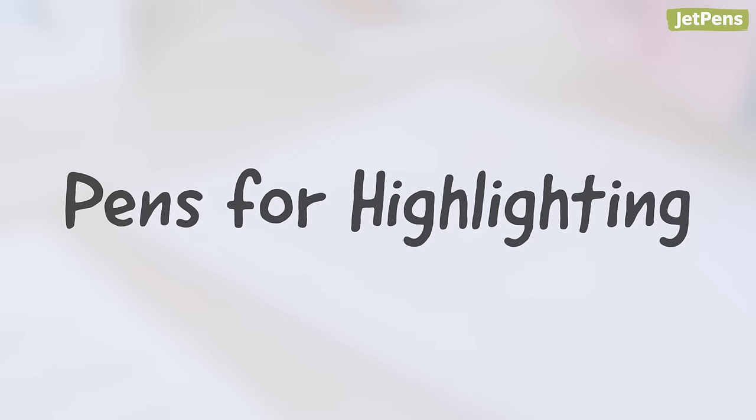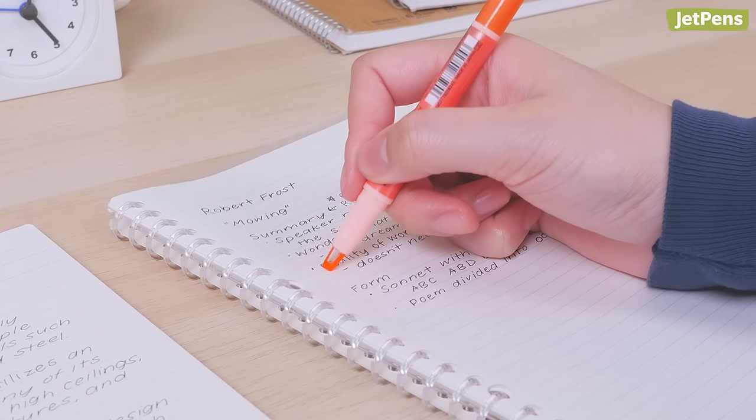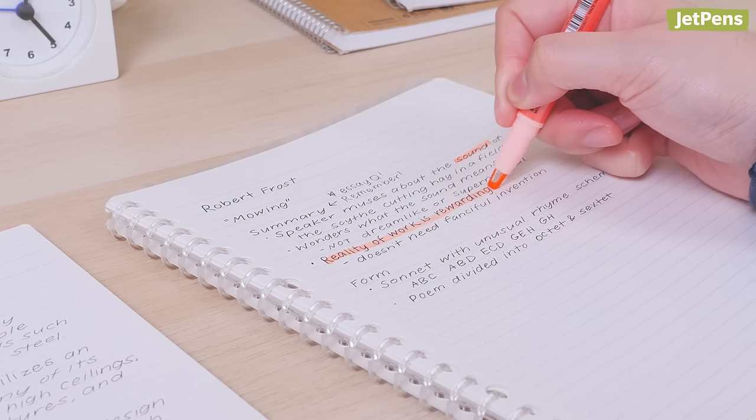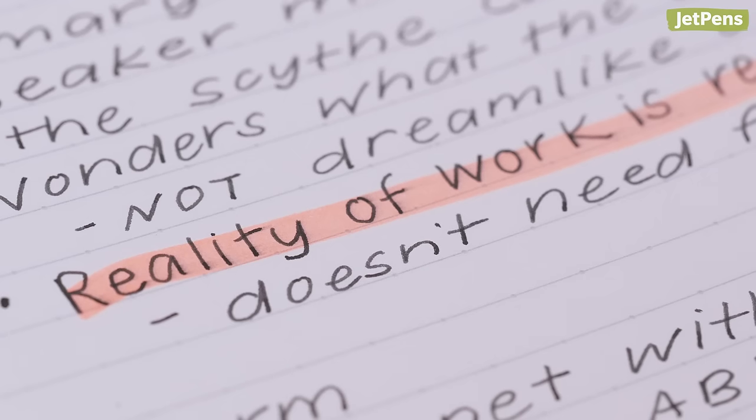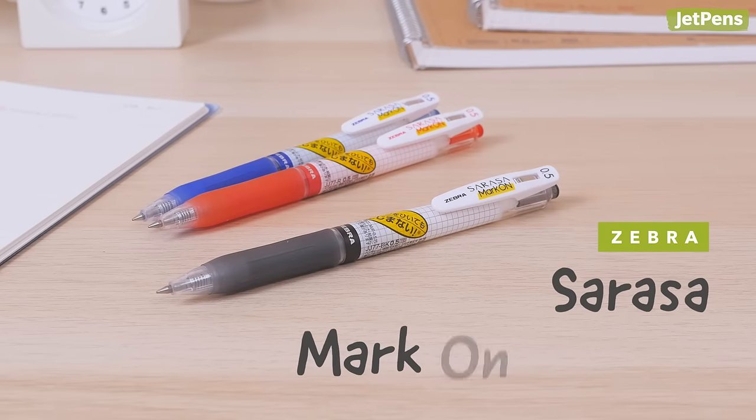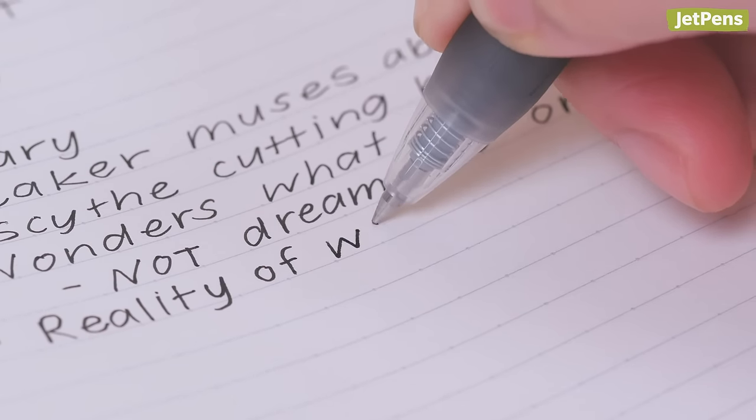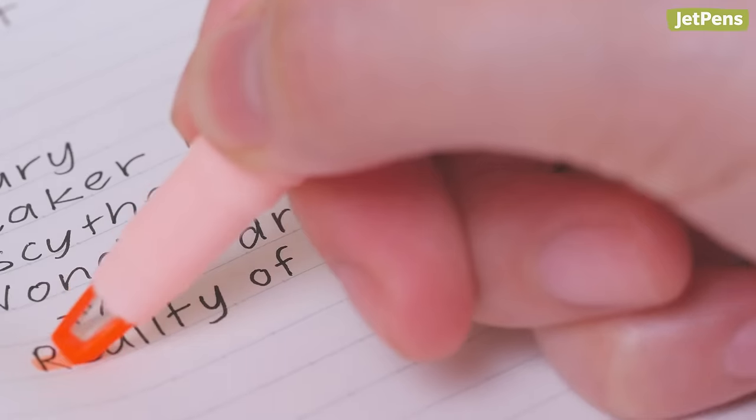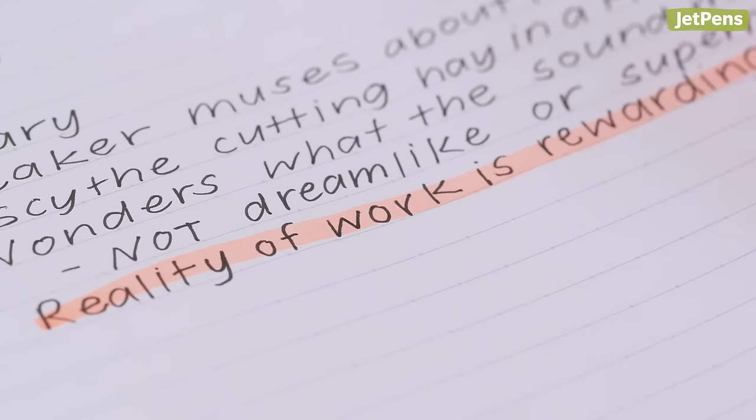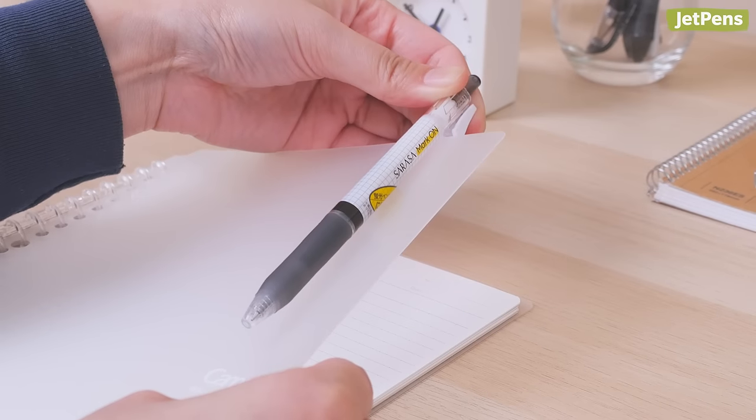Note-taking isn't only about writing things down. Highlighting is an important way to bring attention to key terms. But it can be hard to find a pen that resists smearing. Enter the Zebra Sarasam Mark-On. Made specifically for this purpose, the pen stands up to highlighting after just 5 seconds. It also features a useful push clip, so you can attach it to a notebook or binder.